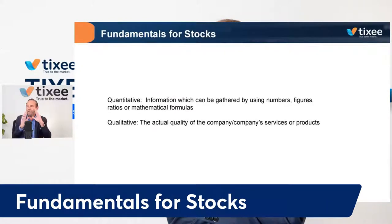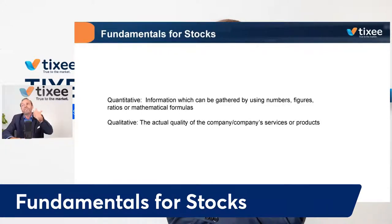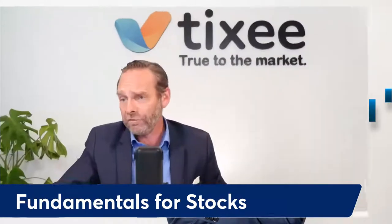Let's move on to fundamentals for stocks, because they're pretty different. There are two main approaches when it comes to fundamentals for stocks. First, you have quantitative fundamental analysis — information which can be gathered using numbers, figures, ratios, and mathematical formulas. And there's qualitative fundamental analysis, where you look at the actual quality of the company's services and products. When it comes to stock fundamentals, you're looking to identify a company's value and its actual worth as a business.